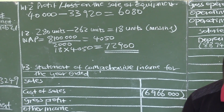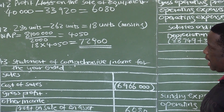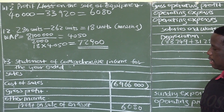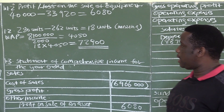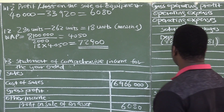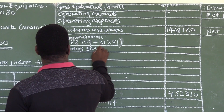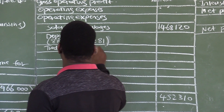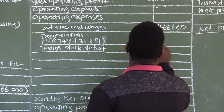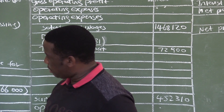To summarize: we calculated the trading stock deficit by comparing the expected 280 units to the physical count of 262 units, finding 18 units missing. The weighted average price is 4,050 per unit, and 18 multiplied by 4,050 equals 72,900. Remember, this is an expense, so we transfer it to operating expenses as trading stock deficit — 72,900.